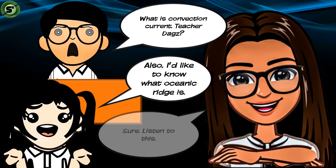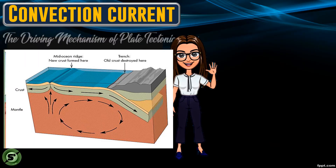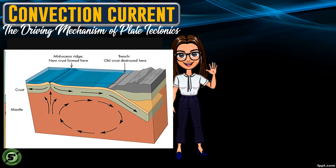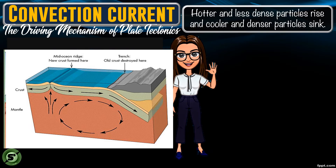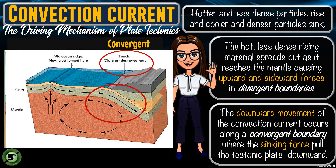Let's unblock our vocabulary for convection current and mid-ocean ridge. Convection current is the driving mechanism of plate tectonics. In convection current, hotter and less dense particles rise, while cool and denser particles sink. The hot, less dense rising material spreads out as it reaches the mantle, causing upward and sideward force. This is evident in divergent boundaries.